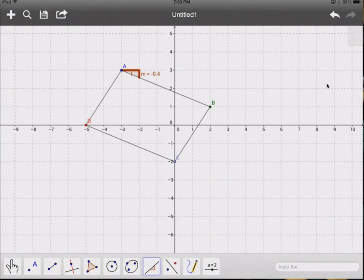Let's see what D to C is, that bottom side. Let's see what the slope is there. Sure enough, it's also negative 0.4. That tells me that those two sides are indeed parallel.